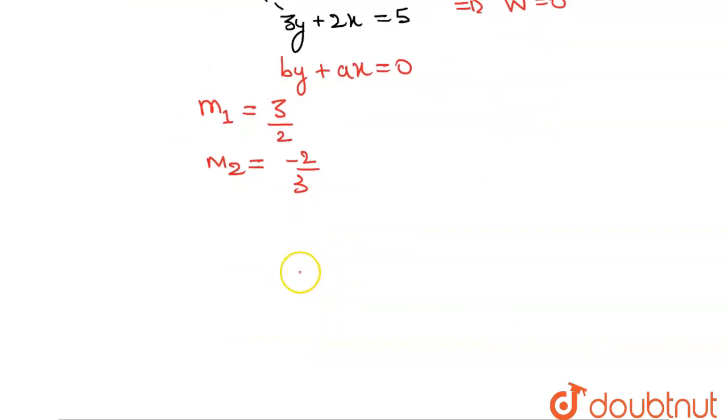We know that the product of the slopes is always equals to minus 1. That means M1 M2 equals minus 1, and we are getting that as well after multiplying.